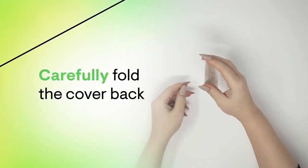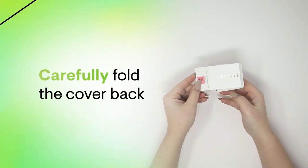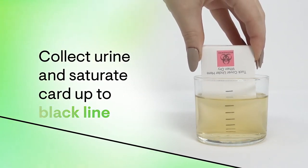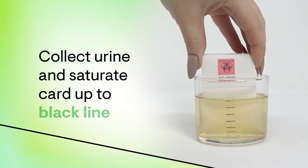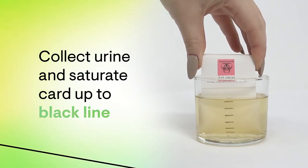Being careful not to touch the filter paper, open the cover on the card and fold it back, away from the filter paper. Collect the urine in a clean cup and saturate the filter paper by dipping it into the cup to the top black line, the one nearest to the biohazard symbol.